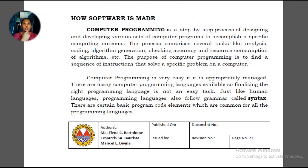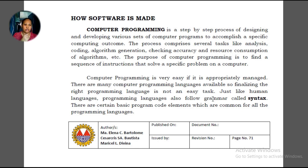So how is software made? This is where computer programming comes in. It is a step-by-step process of designing and developing various sets of programs to accomplish a specific computing outcome. Computer programmers are responsible for the software we use. If you're familiar with computer programming courses, you know it can be difficult because it involves a lot of coding.